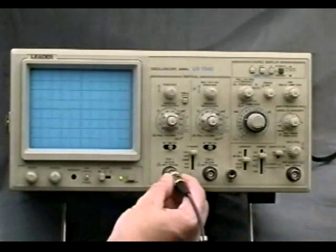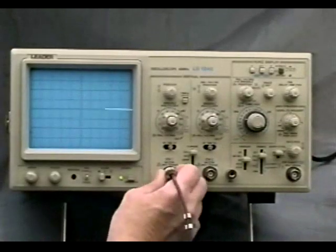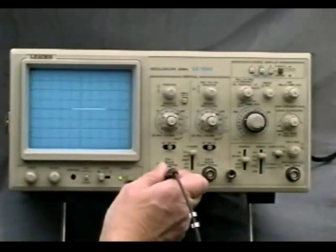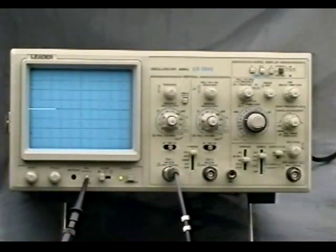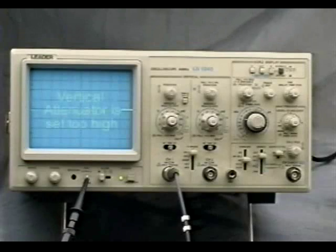I'll connect the scope probe to the channel A input. Because we're using a 10x scope probe, we need to compensate the probe. We'll use the cal source provided internally by the oscilloscope.